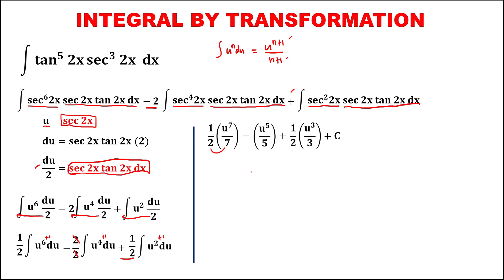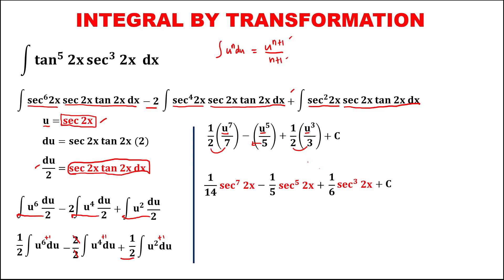Simplifying and substituting back u equals secant 2x: multiply 2 times 7 to get 1 over 14, giving secant to the power 7, 2x. Then negative 1 over 5 times secant to the power 5, 2x. Then multiply 2 times 3 to get plus 1 over 6 times secant to the power 3, 2x, plus C. This can be written as secant to the power 7, 2x, over 14, minus secant to the power 5, 2x, over 5, plus secant to the power 3, 2x, over 6, plus C.